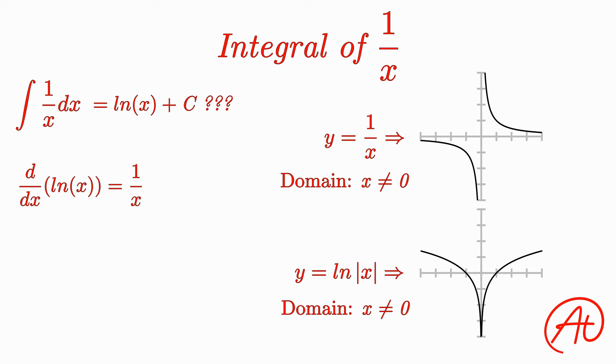Now, although this wasn't an extensive proof, this is exactly what the answer ends up being. The integral of 1 over x is ln of the absolute value of x plus c.